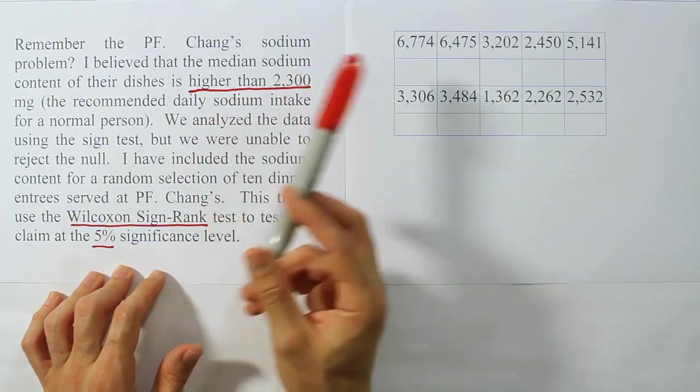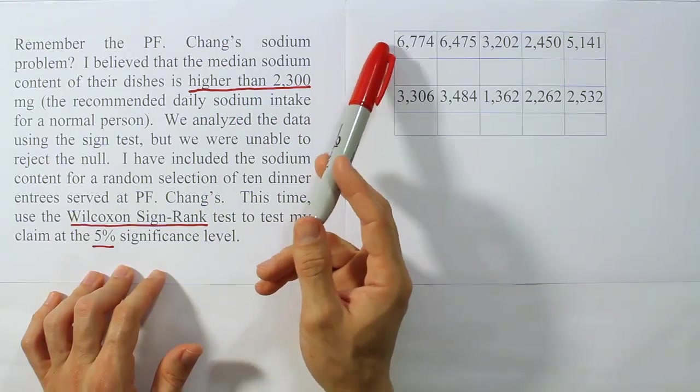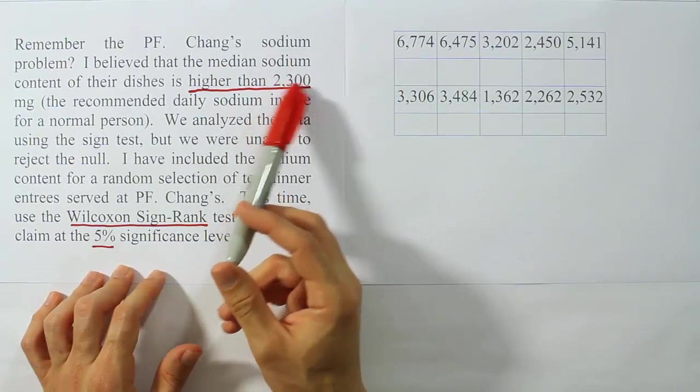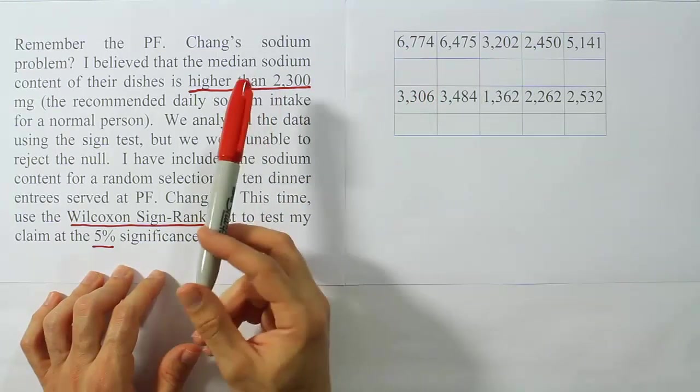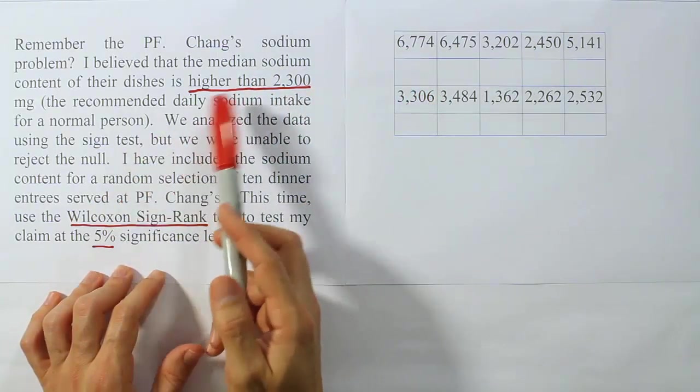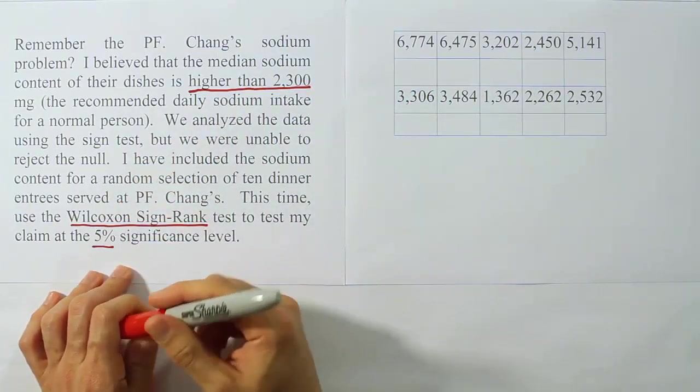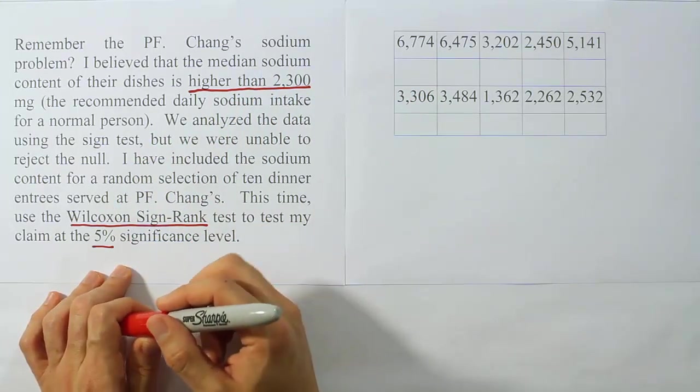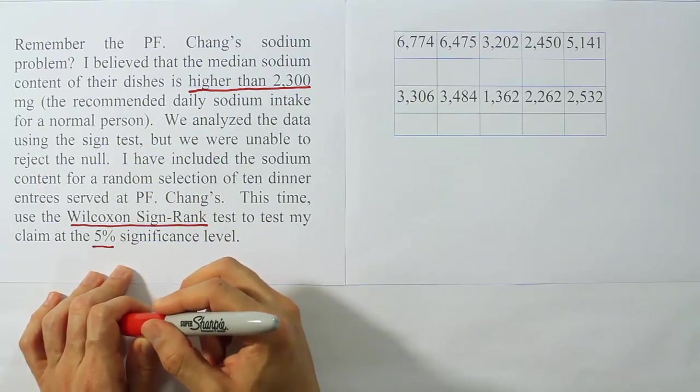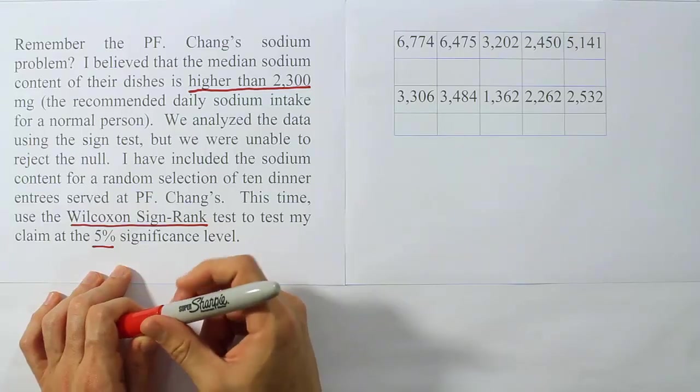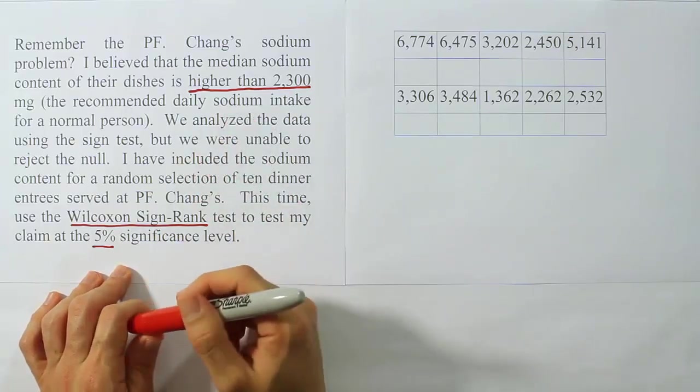This median they gave us of 2300, we're going to subtract that from every single data value and get a difference. That will be like our before and after subtraction. Instead of using a pre-post type setup, we'll just subtract this median from every single number on the list. Then we'll come up with the absolute differences, rank those absolute differences, so on and so forth. So let's go ahead and do that.